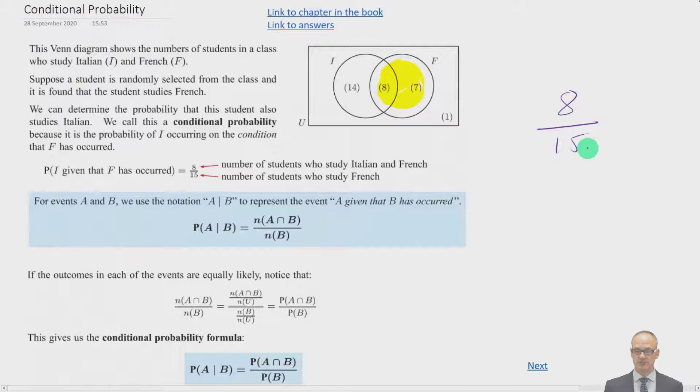And this is conditional probability. So basically the probability that they study Italian given that they study French. We use a straight line to mean the word given. We can see that if you have probability of A given B, then it's the number of elements in A intersect B, which is this bit in the middle, divided by the number of elements in B, which is all of these things in here.